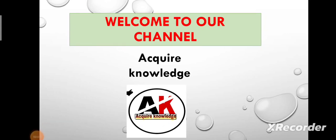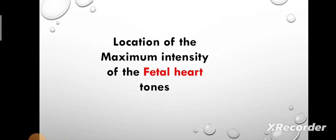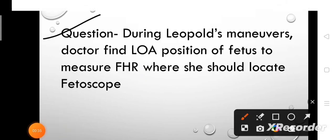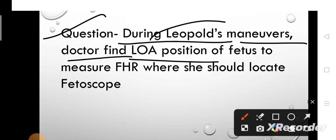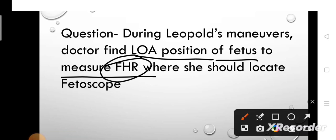Welcome once again to our channel A Coronelist, this is Jagrati. Friends, today we will read about the most important topic: location of the maximum intensity of fetal heart tones. This topic is related to OVG subject, that is obstetrics. One or two questions related to this topic are definitely seen in nursing competitive exams. A question type is: during Leopold's manual, the doctor finds LO position and needs to measure FHR, that is fetal heart rate.